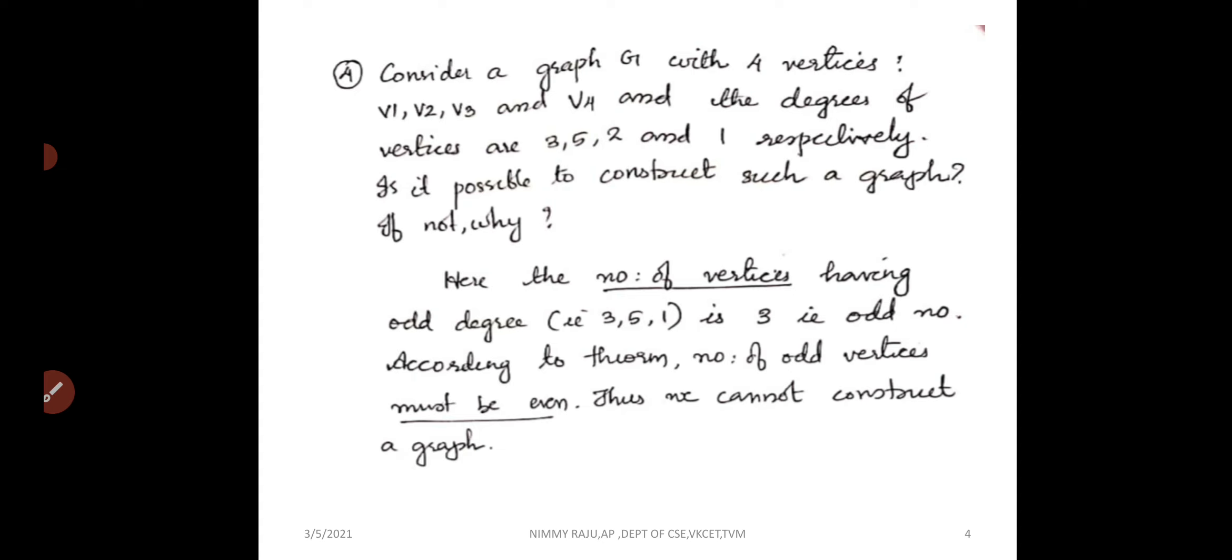Now, the number of vertices having odd degree must be even. So if you have odd degree means 3, 5 and 1, that means odd degree is 3 vertices. That is an odd number. So we cannot, it is not possible to construct a graph here.